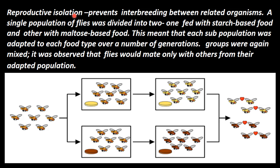This is reproductive isolation — they had become isolated from each other. They could not reproduce with one another. Though the ancestor is the same, they could not interbreed. This is called reproductive isolation, and it plays a very important role in evolution.